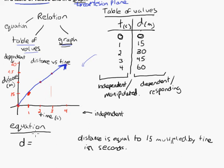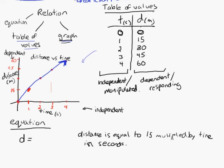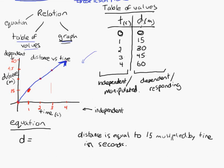If distance is equal to 15 multiplied by the time in seconds, and we knew that D represented distance and T represented time, then basically the D, or the distance, is equal to 15 multiplied by the time. That's our equation, 15 multiplied by time.